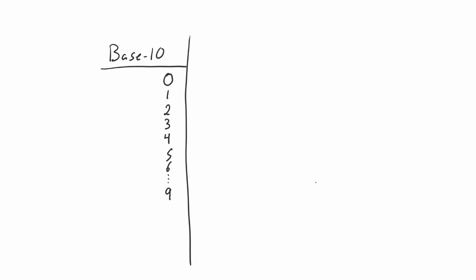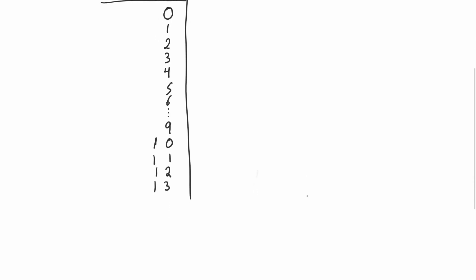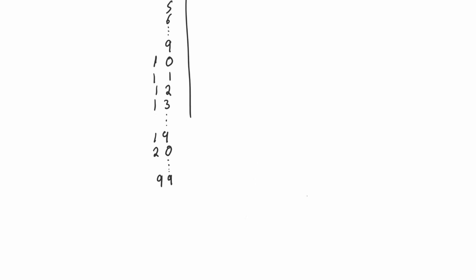When we get to number 9 we no longer have a digit to represent the next number — there is nothing that can with one character represent the number 10. So what we do is we add another digit to the left of it, starting from the beginning, and the right digit starts again from zero. We keep doing so until we get to 19, then again up to 99, at which point the number 100 starts a new digit on the left and the two digits that were nine get reset back to zero. Essentially this is how we count in the decimal number system.